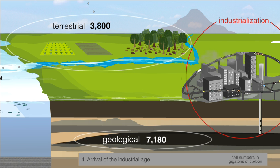Industrialization changed the landscape. Extracting and burning fossil fuels to power new modes of production and transportation had a direct impact on the carbon cycle.